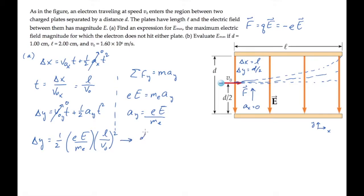When delta y equals d over 2, the electric field is at its maximum value, so we can substitute those and solve for an expression for emax.